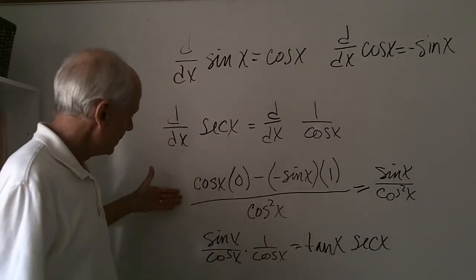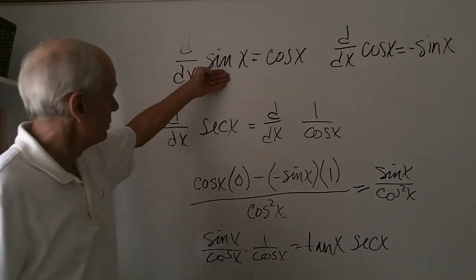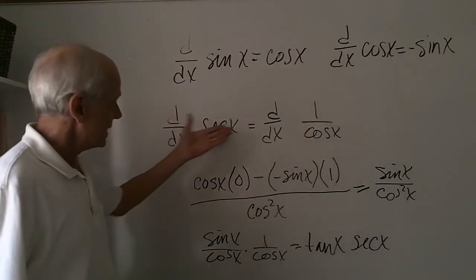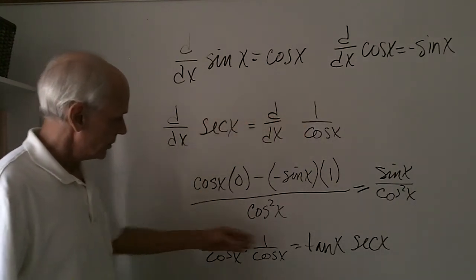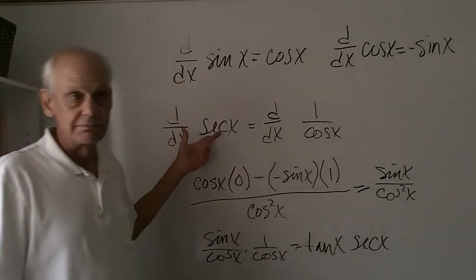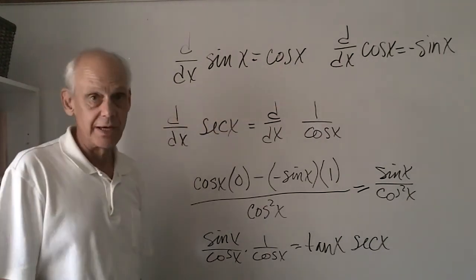And you'll notice that simply using the quotient rule with these two derivatives of sine and cosine and the fact that secant is equal to 1 over cosine, you are able to derive the derivative of secant x. The other three functions that we haven't covered are derived in much the same manner.